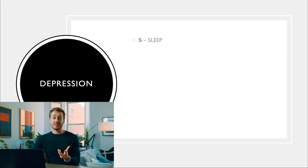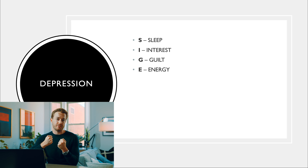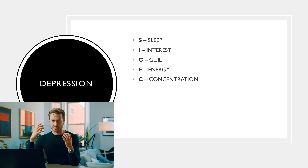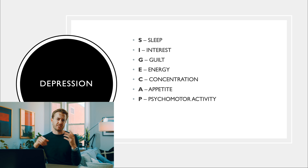The next mnemonic is SIG E CAPS, used to screen someone for depression. S is sleep — any changes? I is interest — do you still have interest in things? G is guilt, E is energy, C is concentration — any cognitive changes? A is appetite — eating more or less? P is psychomotor activity — more or less active? And S is suicidal ideation.